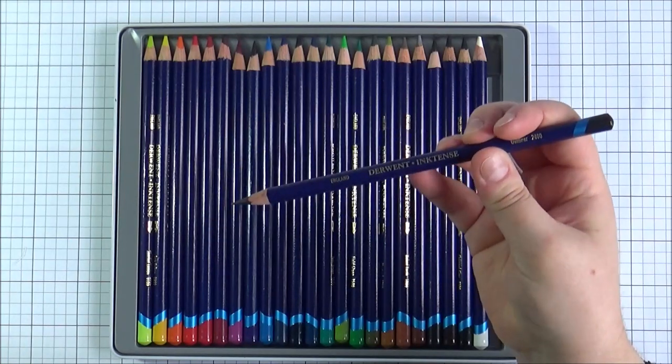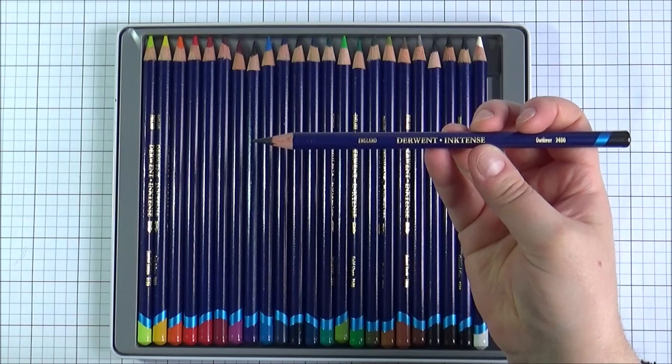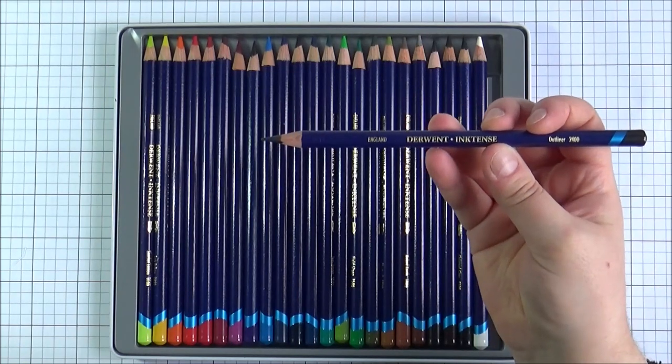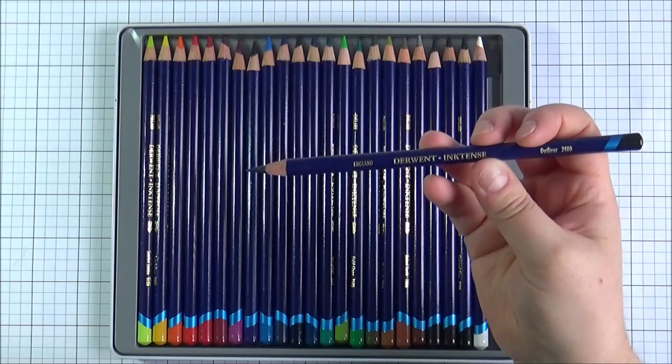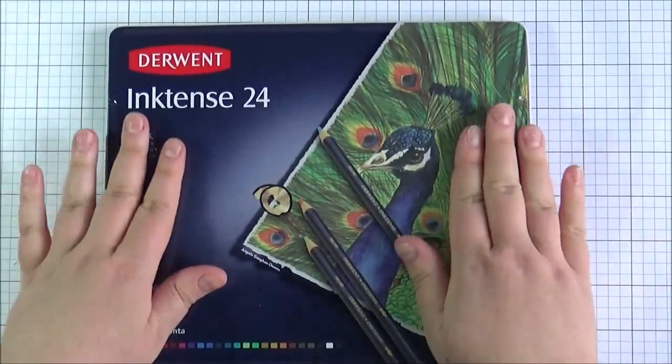Just really really nice. You can actually take the paintbrush to the tip of the Inktense pencil as well so you've got quite a lot of different techniques you can use with them and they do dry permanent as well so it's quite nice so you can add layers and layers of the different colours on top which is nice to have.